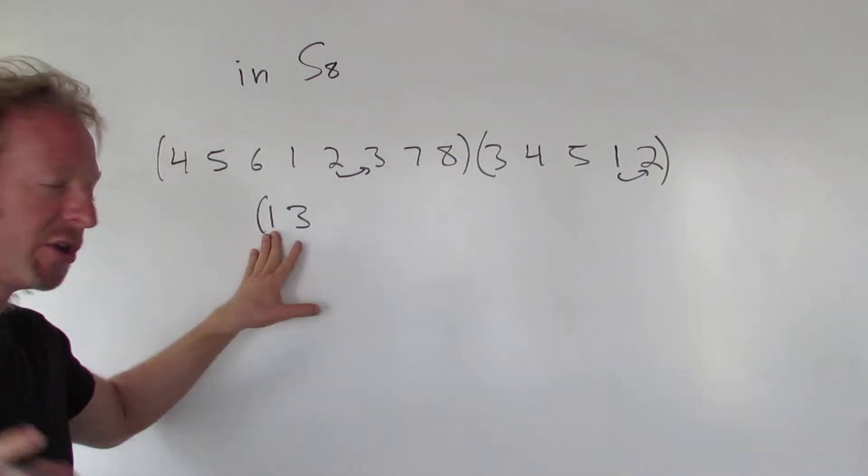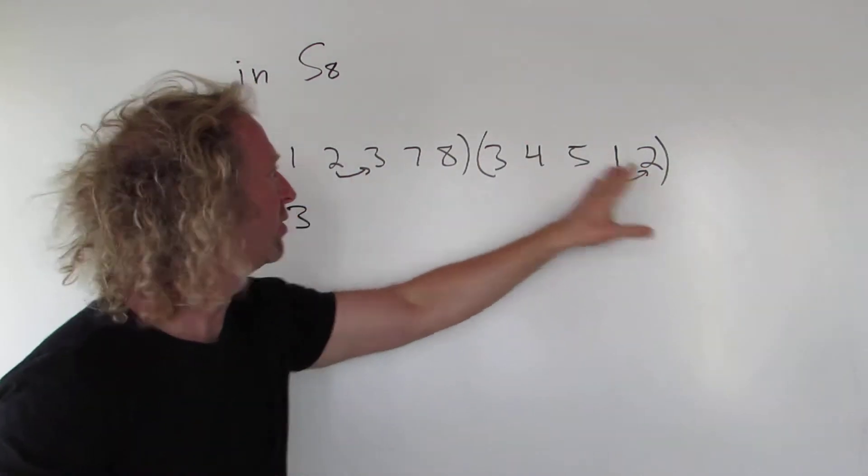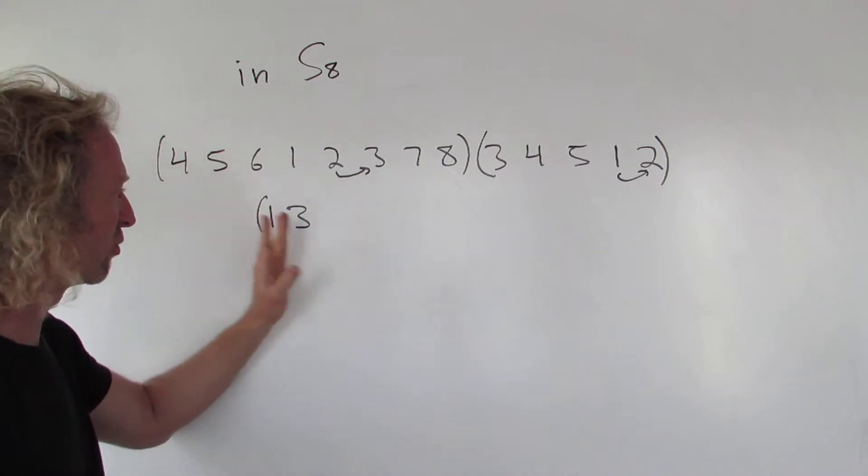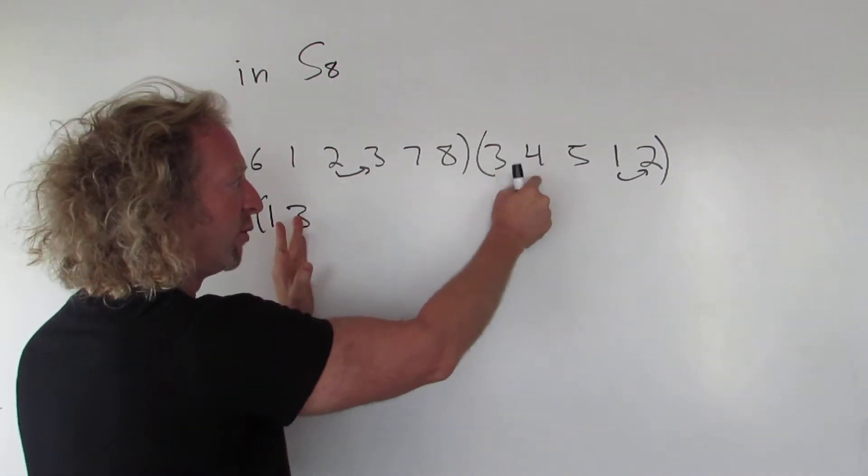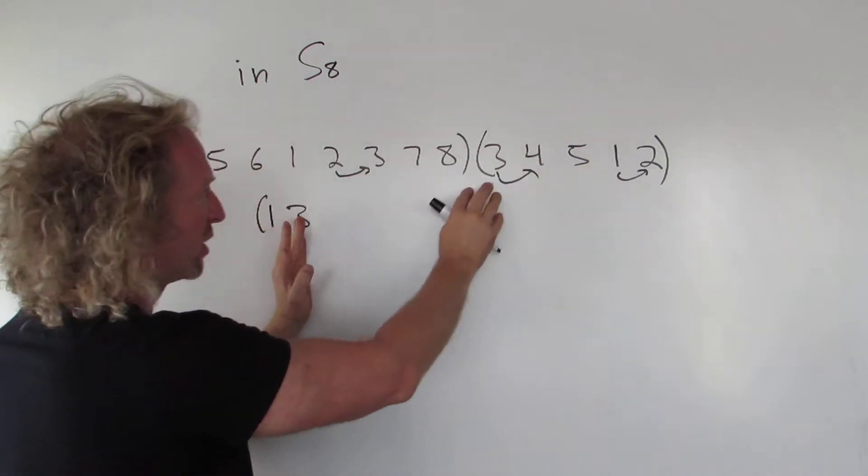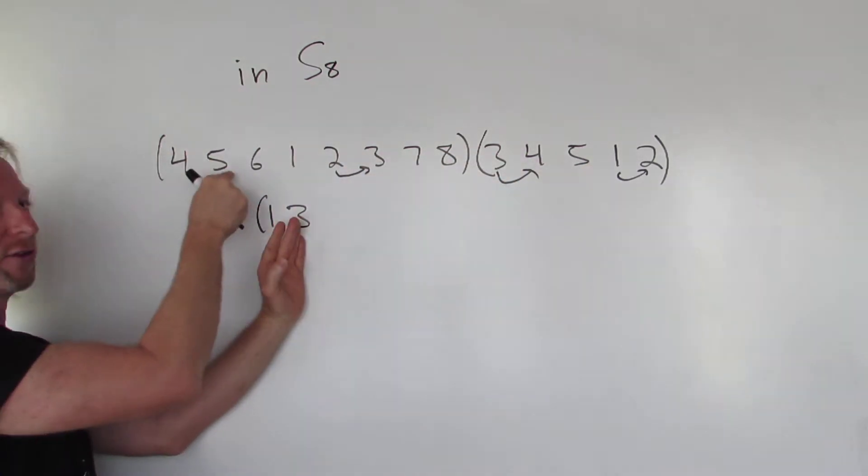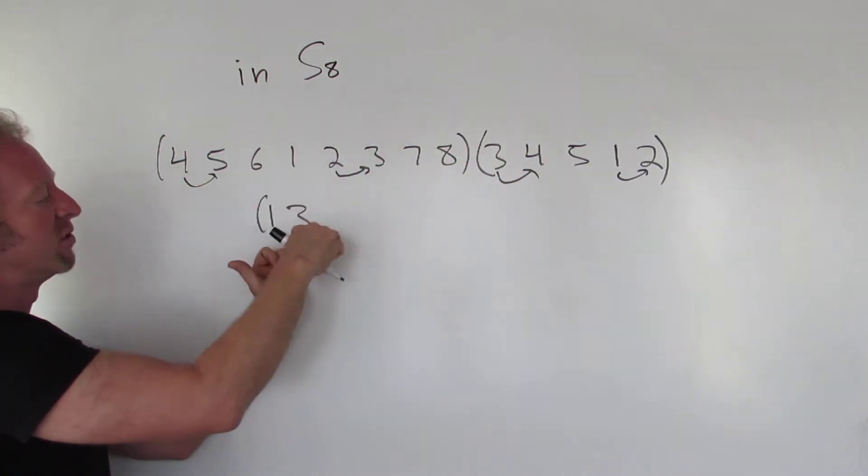So again, we did the number 1. Starting with 1, 1 goes to 2 and 2 goes to 3. So 1 goes to 3. Now we go to 3. 3 goes to 4. I'm just going to keep going. 3 goes to 4, so 4 goes to 5. That means 3 goes to 5.